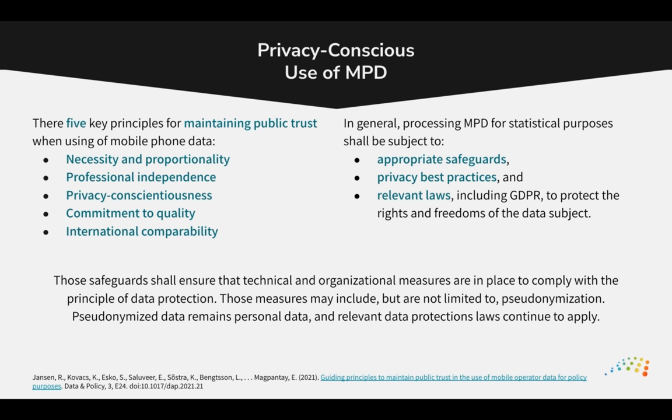Individuals' location data is highly sensitive. It is therefore essential that subscriber privacy is protected when working with mobile phone data. In order to preserve public trust in the use of mobile phone data, five key principles must be adhered to. The use of mobile phone data must be fit for purpose — the data must be necessary to achieve the objectives of a project and the project must warrant the use of individuals' location data.